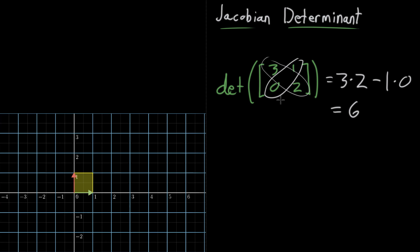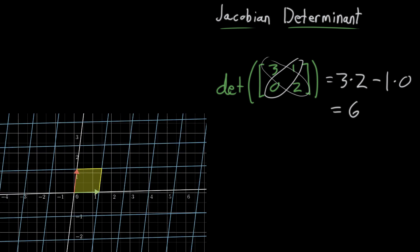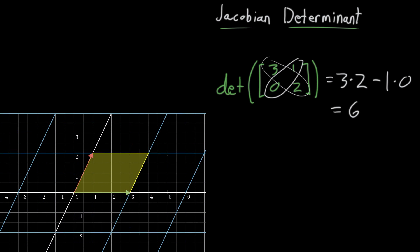But there is, of course, much more than just a computation going on here. There's a really nice geometric intuition. Namely, if we think of this matrix as a linear transformation, as something that's going to take the first basis vector over to the coordinates (3, 0) and that second basis vector over to the coordinates (1, 2), thinking about the columns,